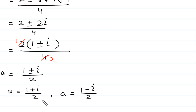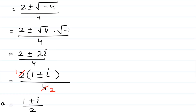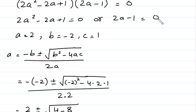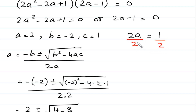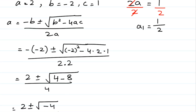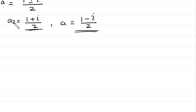Now solving the other factor, 2A minus 1 equals 0. We get 2A equals 1, and dividing both sides by 2, A equals 1 over 2. This is the first root of A, a real number. A equals 1 plus iota over 2 is the second root, a complex number, and A equals 1 minus iota over 2 is the third root, also a complex number. So these are the three solutions of this equation.